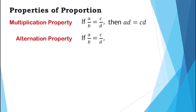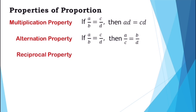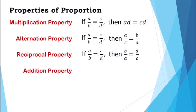Next, we have the reciprocal property: if a over b is equal to c over d, then b over a is equal to d over c. This means that if two ratios are equal, then their reciprocals must also be equal, as long as they exist. Next, we have the addition property: if a over b is equal to c over d, then a plus b over b is equal to c plus d over d.